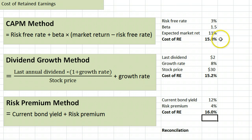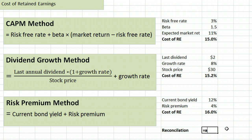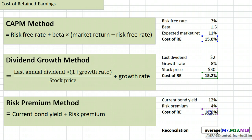So there are three different methods, and you can see we got three different answers. They should be close to each other, and one thing you can do to determine the cost of retained earnings is to take the average of the three methods, which would give you 15.4%.